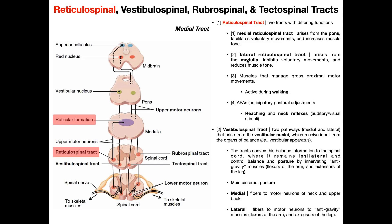The other area where the reticulospinal tract is active is APAs, or anticipatory postural adjustments. We see this with fast forward reaching, self-initiated perturbations, and neck reflexes. If you want to learn more about APAs, there's a video on my channel — just search APAs and you should be able to find it.